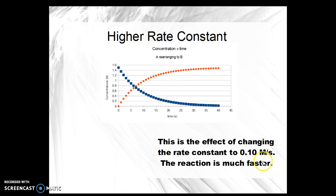If we increase the rate constant to 0.10 molar per second, we get, again, another logarithmic decay, but it's much, much steeper. In other words, if we plotted any of these logarithms against time, we would get a straight line.